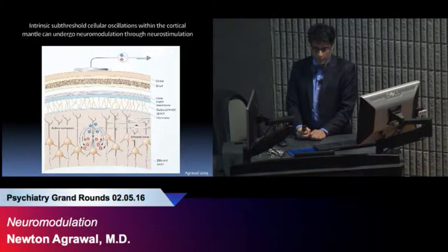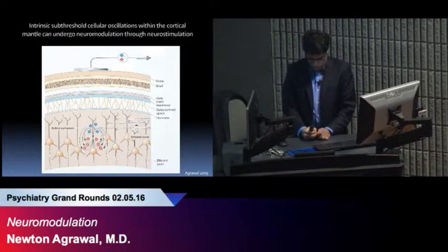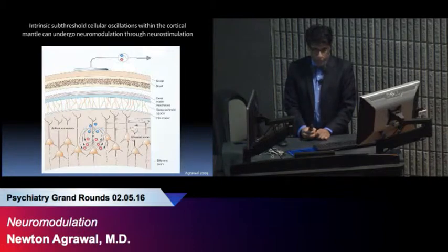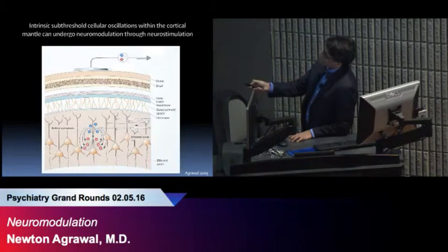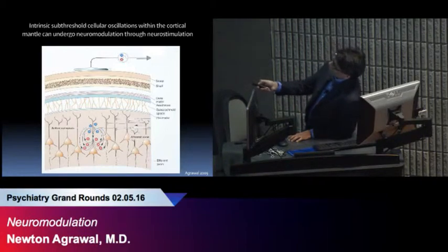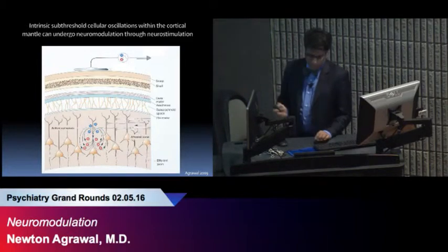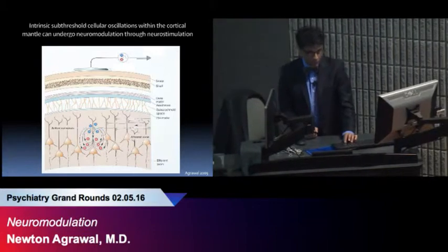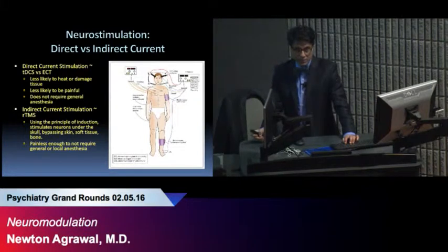If we look at the cortex, a slice of the cortex, we can see that through neurostimulation, we can cause intrinsic subthreshold oscillations to occur, which modulate cortical neurons. And this actually has an effect on neuroplasticity. There's basically two types of neurostimulation: the first involves direct currents and the other is indirect current.